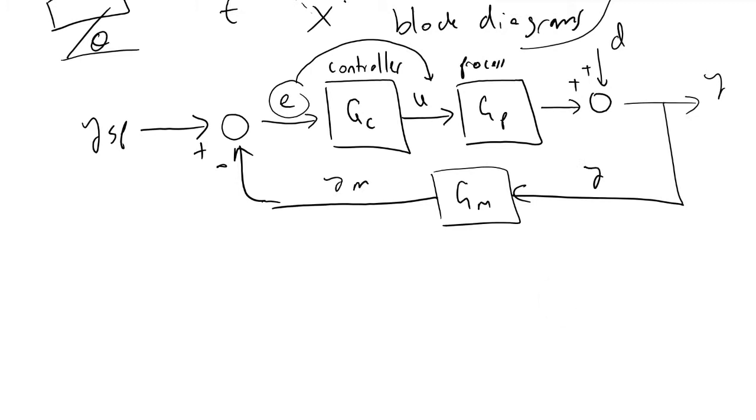I'll just finish labeling these streams. We define our error, E, to be equivalent to this Y_SP, that plus Y_SP, minus Y_M, the measured value of wherever your ball is over time.